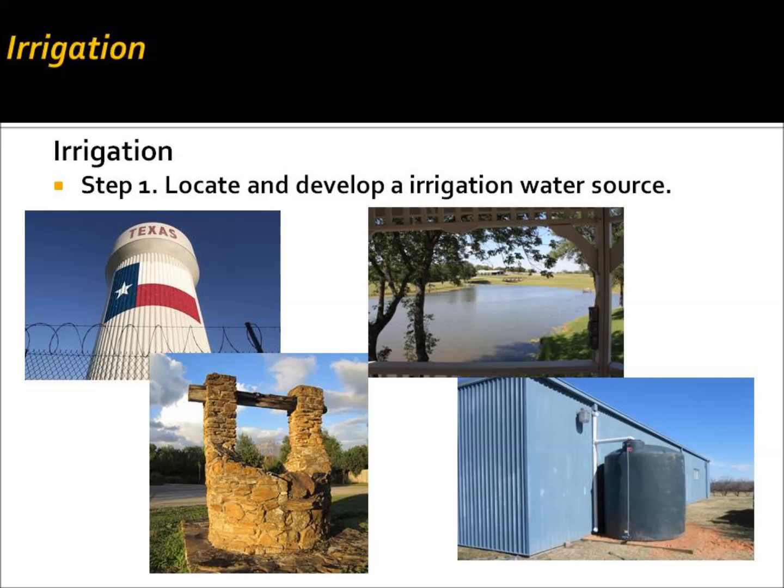Step one is to locate and develop an irrigation water source. Here I have four pictures of potential water sources that agricultural producers can utilize. One is municipal water supply, which can be an expensive proposition for agricultural production and should only be considered in the absence of other available sources. Another source commonly used is pond water — surface water. Another source is groundwater, which can be limiting in North Texas primarily because of the cost to install and the potential for being unsuitable for irrigation use. Rainwater harvesting is also an important source to consider, capturing water off roof lines, especially when you have a large roof line off a barn.